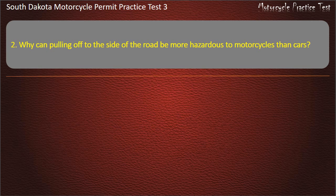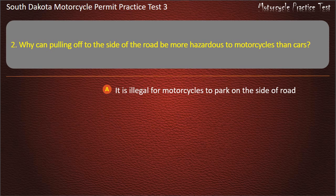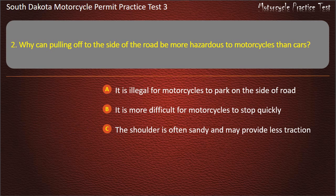Question 2: Why can pulling off to the side of the road be more hazardous to motorcycles than cars? It is illegal for motorcycles to park on the side of the road; It is more difficult for motorcycles to stop quickly; The shoulder is often sandy and may provide less traction; Motorcycles require a curb to park against. Answer: The shoulder is often sandy and may provide less traction.